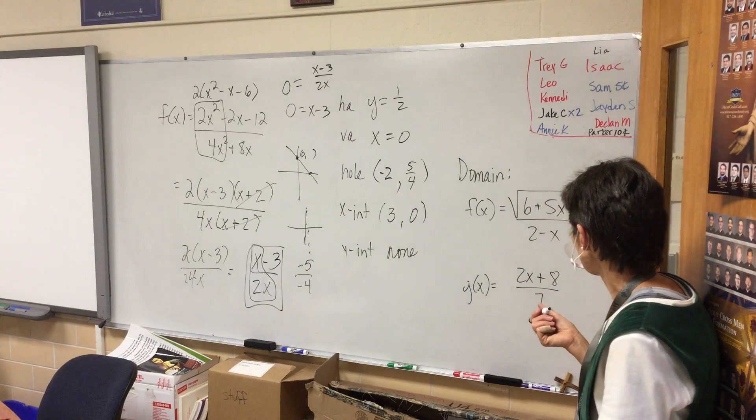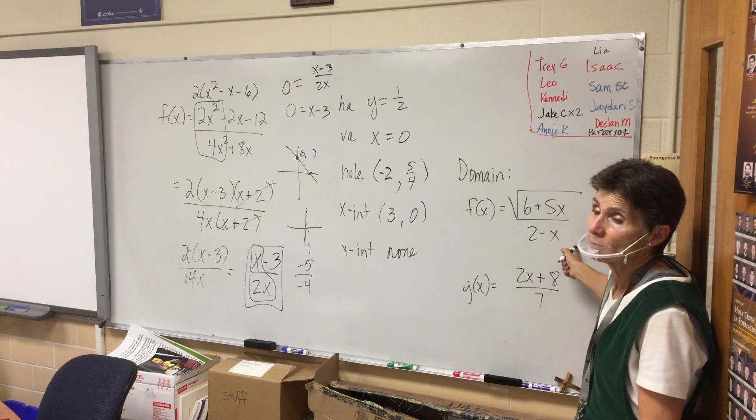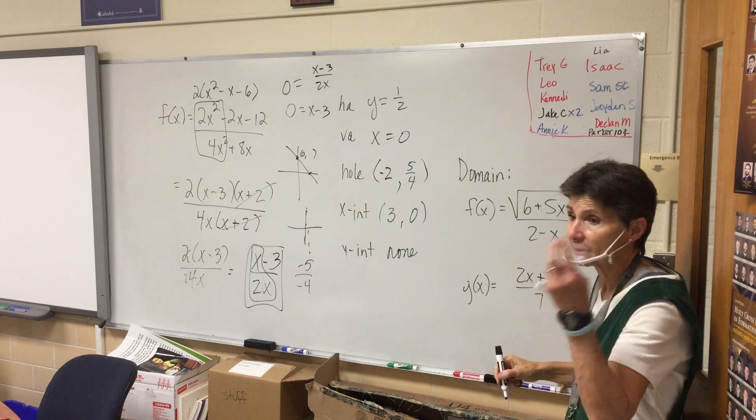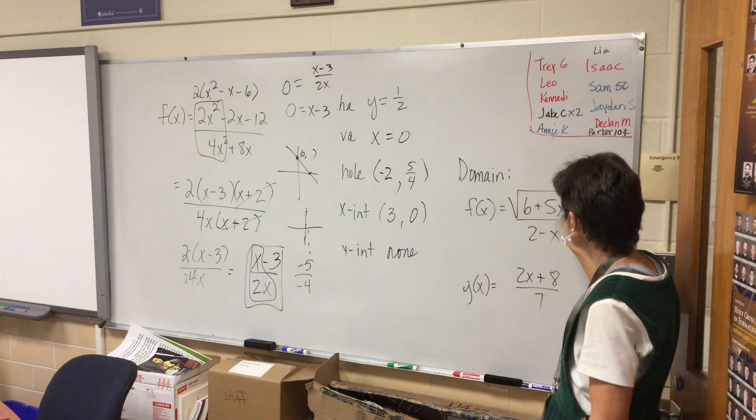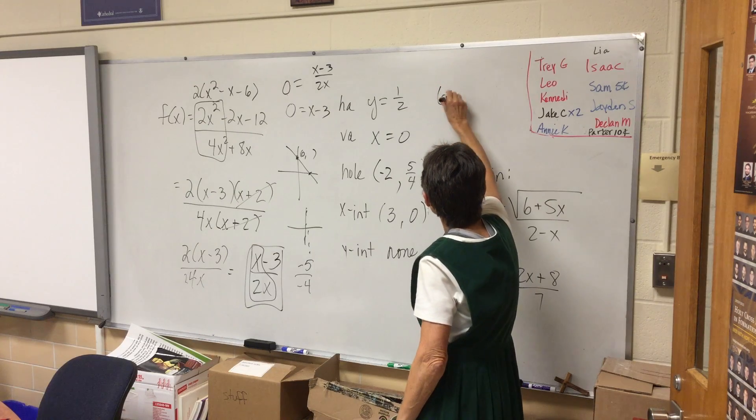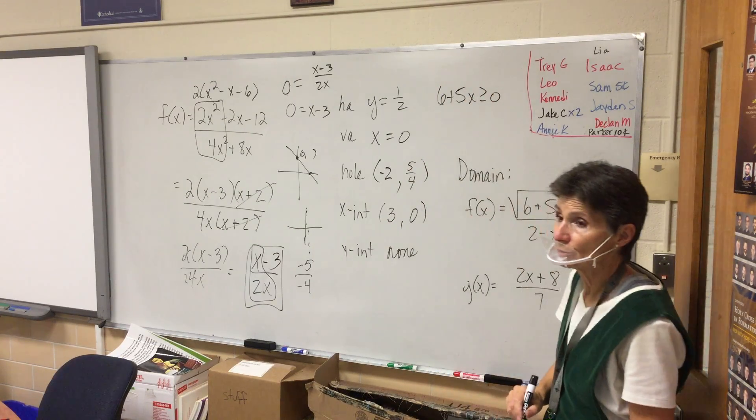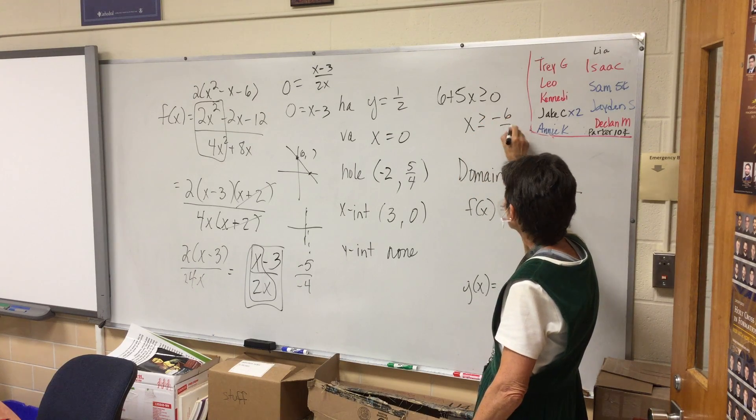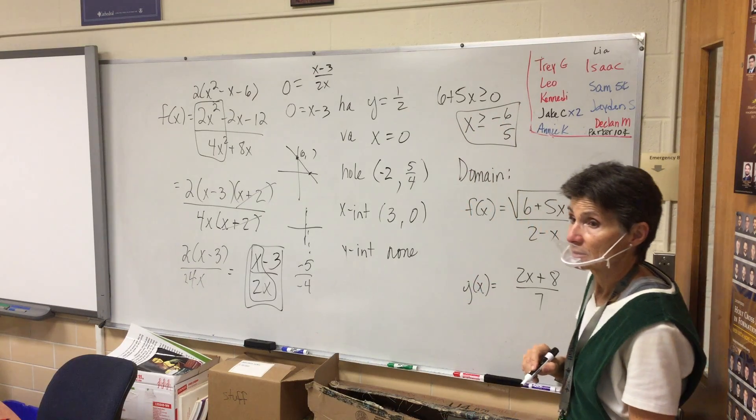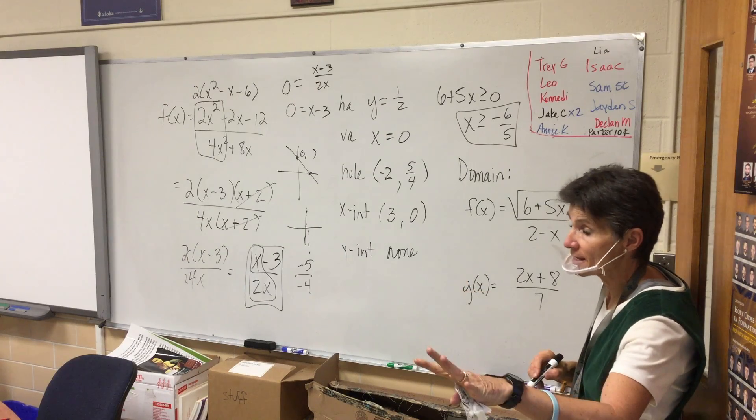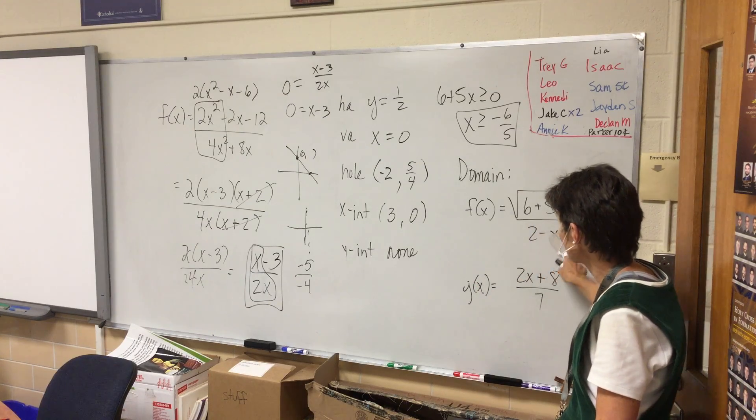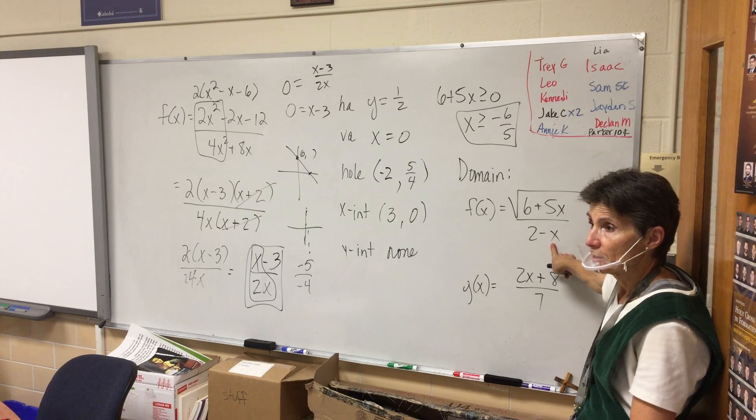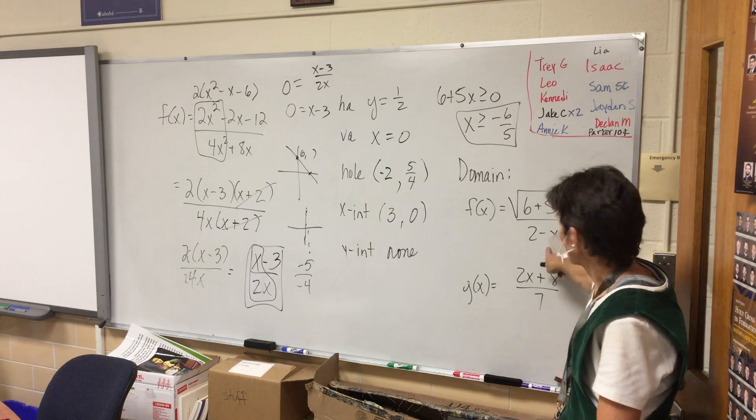All right, find the domain. We've done these forever. What do we need to think about when we're finding domain? Domain for Jacob. Got to think about radicals and denominators. Whatever is under the radical, in this case 6 plus 5x, it has to be bigger than or equal to zero. So I'll just solve that and x ends up being bigger than or equal to negative 6 fifths. That's the first part of the answer. I know that's not an interval, but I got to deal with this. What does this say? X can't be 2 because if you put 2 in there you get a zero. Your denominator cannot be zero. So x cannot be 2.